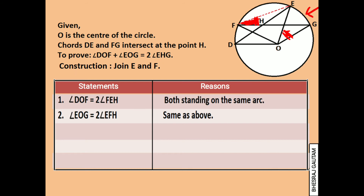Adding statements 1 and 2, we get angle DOF plus angle EOG is equal to double the sum of angle FEH plus angle EFH.